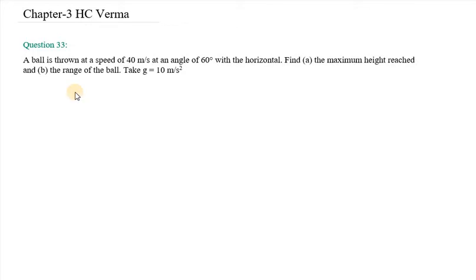Hello everyone, let's start with question number 33. In this, it says a ball is thrown at a speed of 40 meter per second at an angle of 60 degree with the horizontal. Find the maximum height reached and the range of the ball. Range and height hi baad uriya yahan pe.